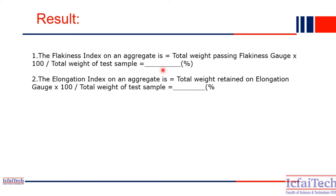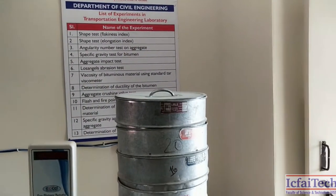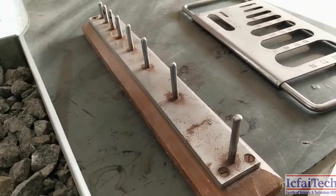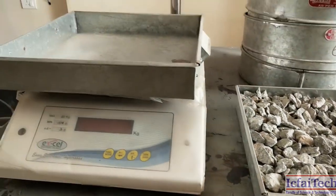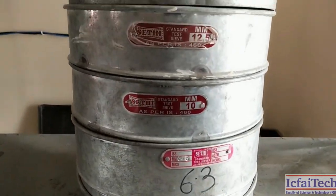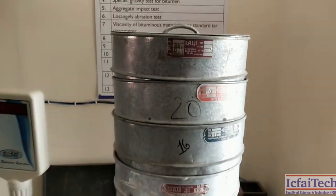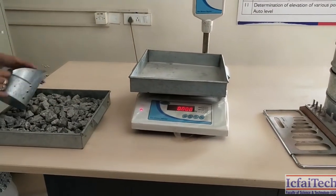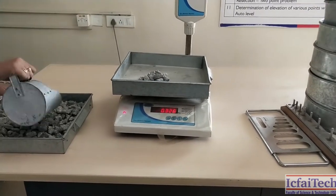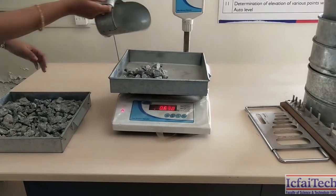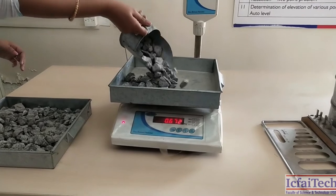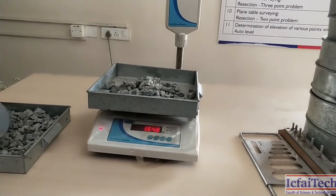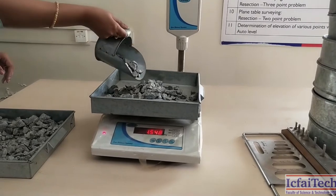Now we begin the actual lab experiment. We are in the civil engineering lab. These are the equipments for this experiment: the flakiness index apparatus, the elongation index measurement equipment, some aggregates for performing the shape test, and a set of sieves. The sieves are kept from higher to lower, with the highest sieve of 25 mm at the top and 6.3 mm at the bottom. We take a 3 kg sample of aggregate and measure it with the balance.